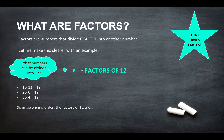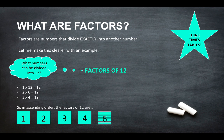So in ascending order the factors of 12 are 1, 2, 3, 4, 6 and 12. Okay, because all of these numbers can be divided into 12.